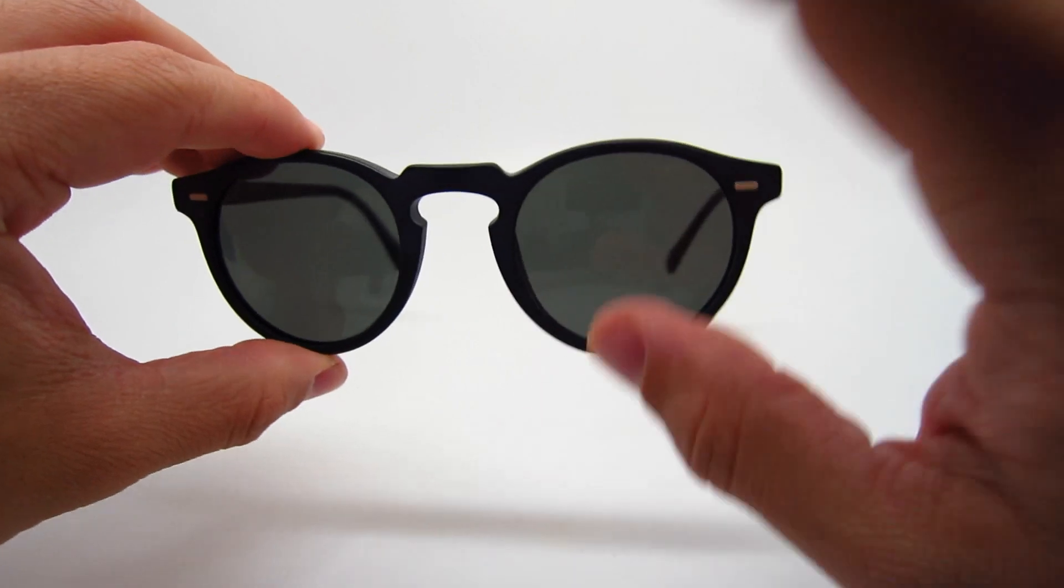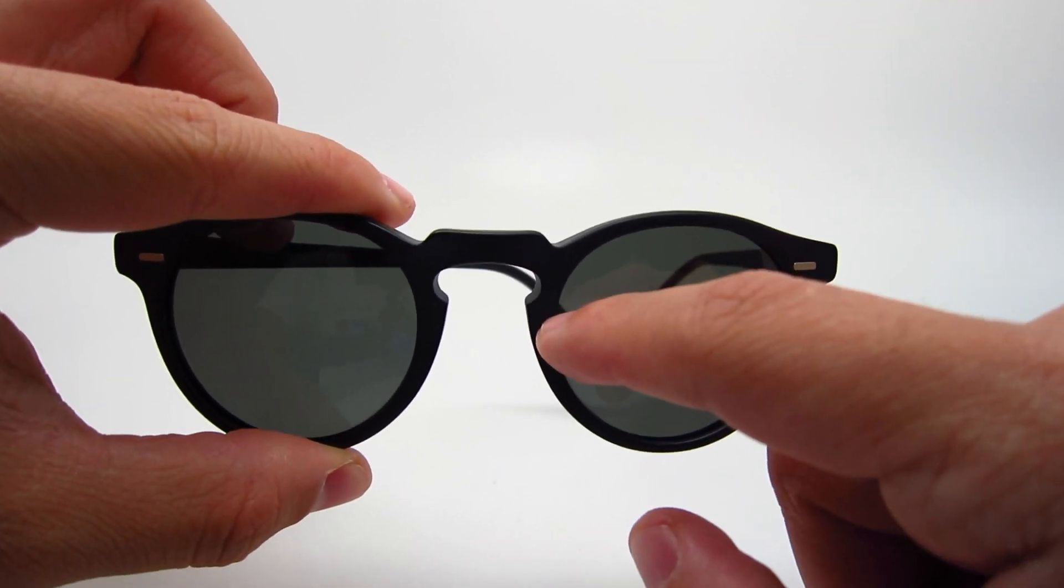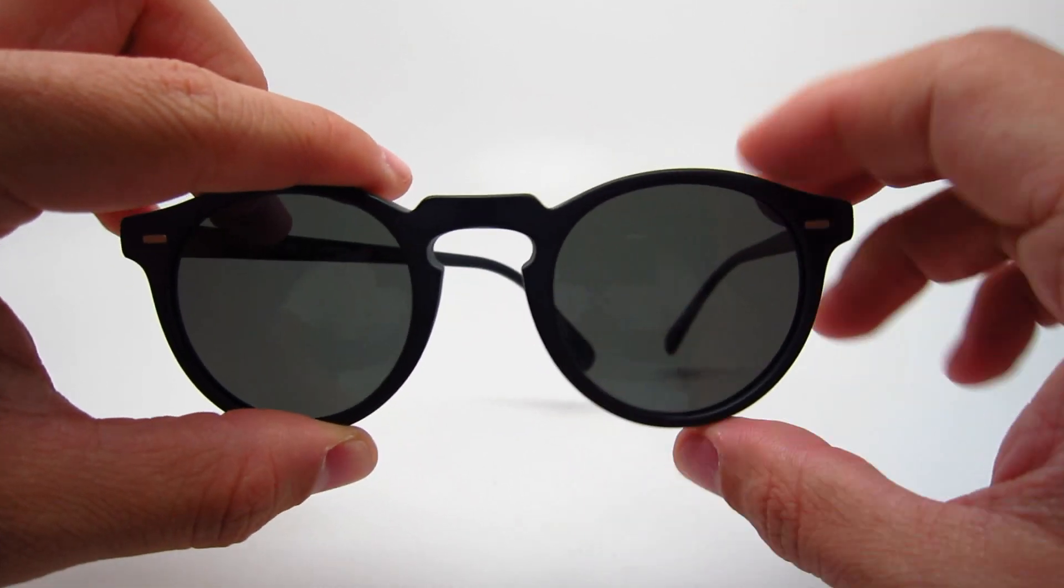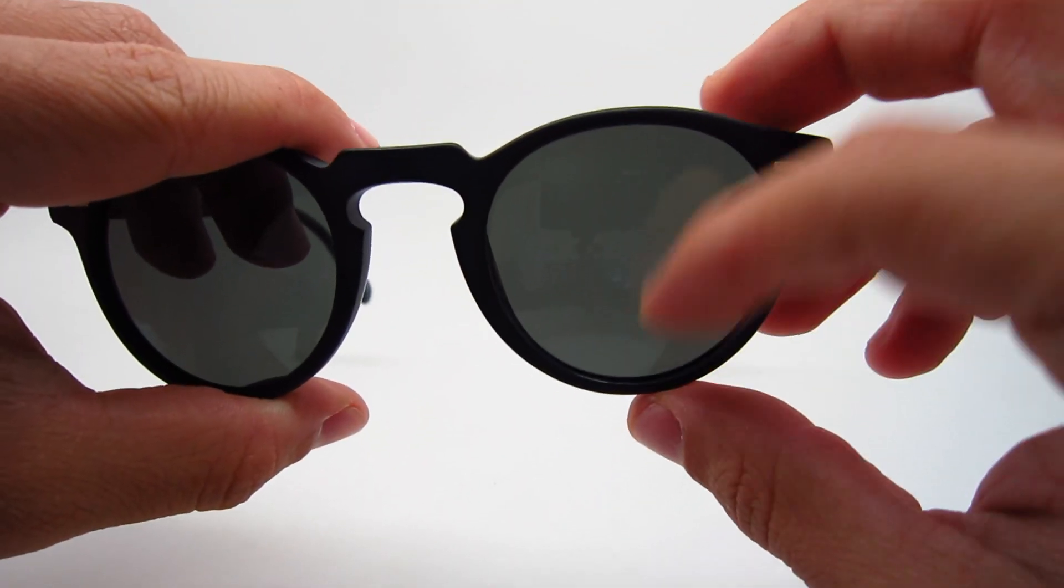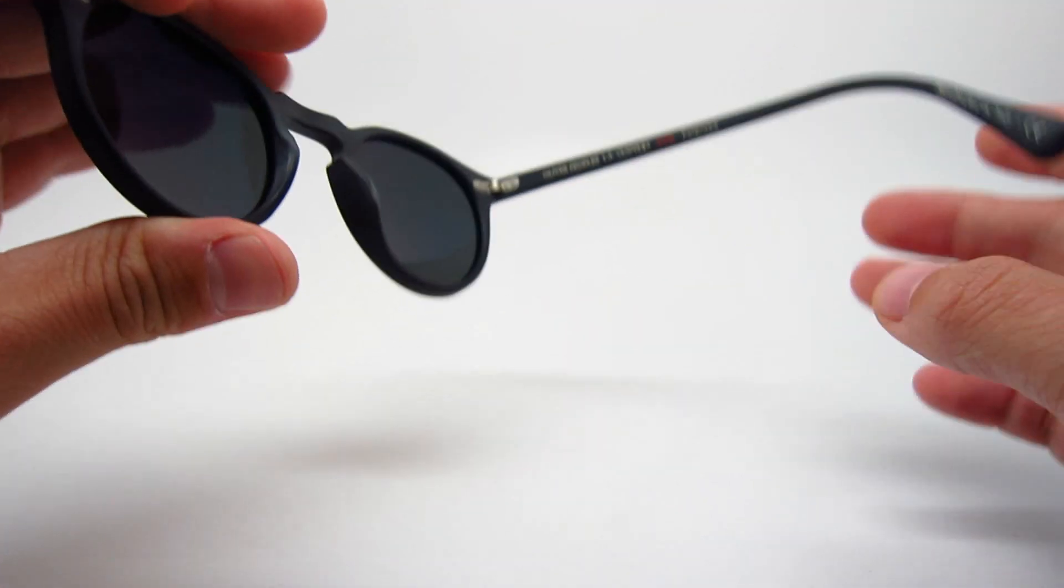As mentioned before, the Sunny comes in one size: 47mm lens width, 23mm bridge width, 42.8mm lens height, and 150mm temple length.